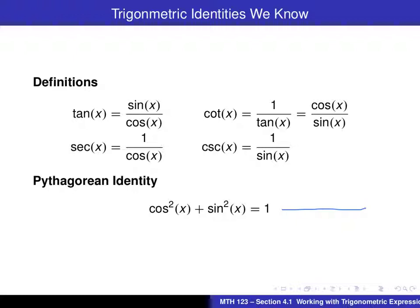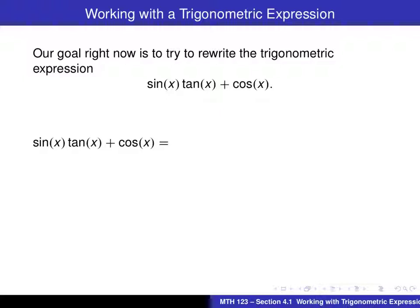Because of that one, I frequently like to work with sines and cosines when working with trigonometric expressions. So in this case, what we want to do now is try to rewrite the trigonometric expression sin(x) tan(x) + cos(x). About the only thing we have at our disposal at this time is the definition of tangent of x as sin(x) divided by cos(x). So we're going to substitute that into the trigonometric expression. And that's what we get.